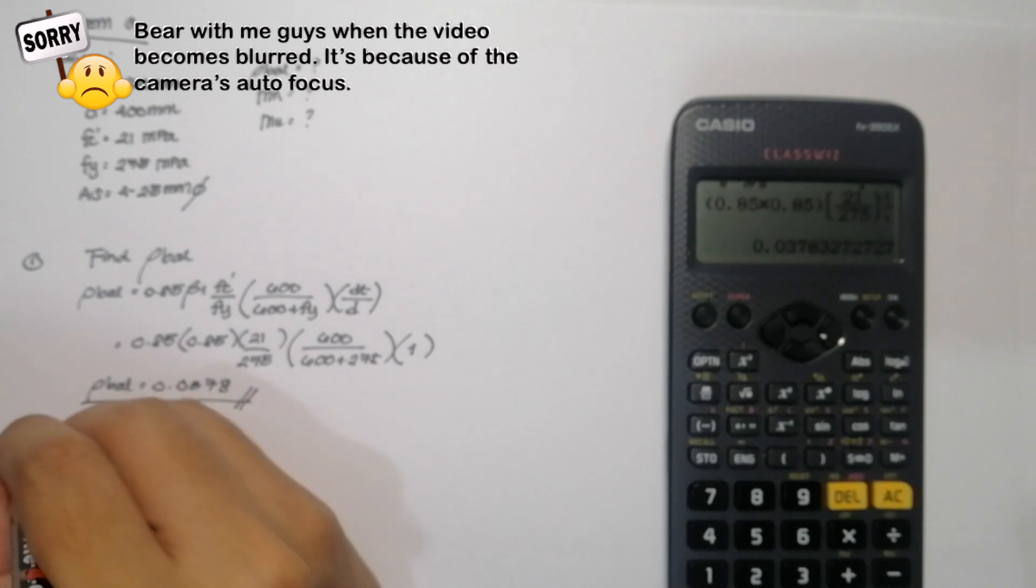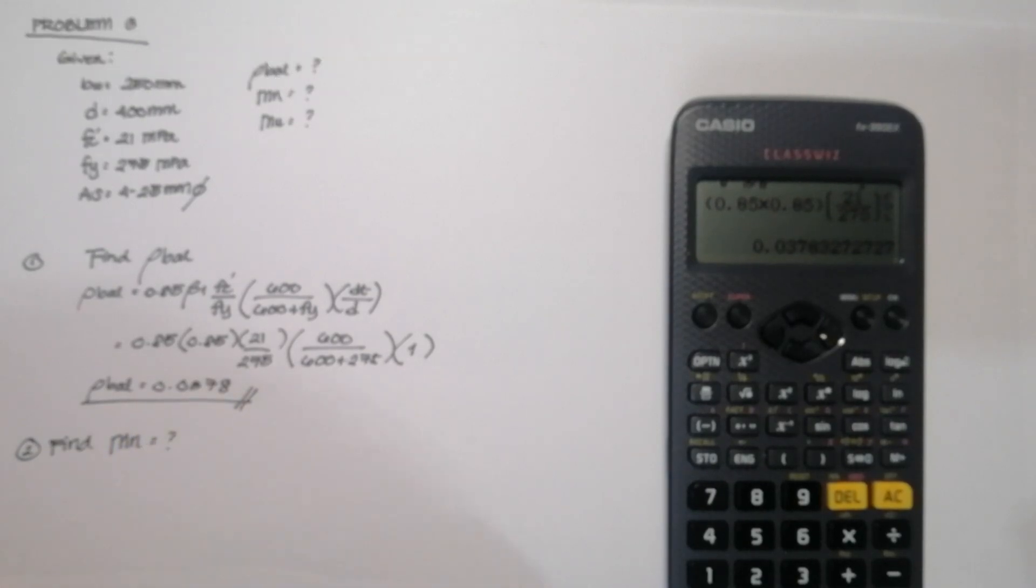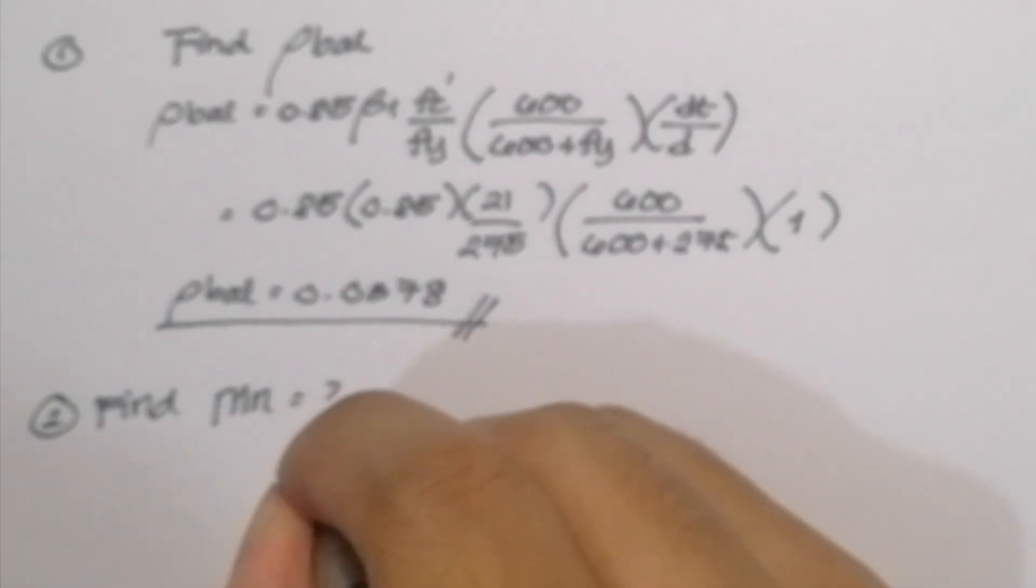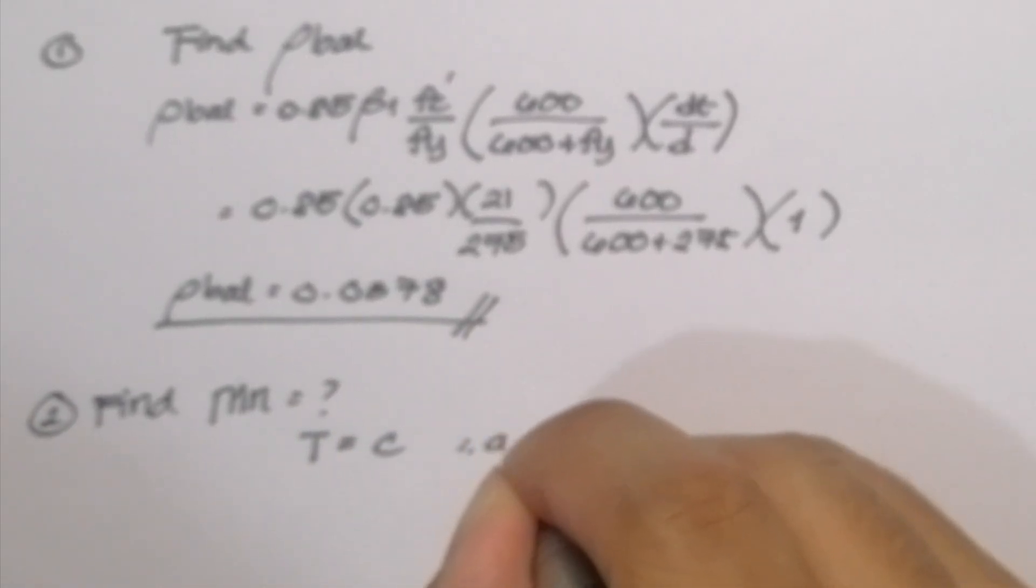So for our second question, we need to find the value of our nominal moment capacity of the beam. So by recalling our previous steps, we first need to equate the value of the tensile force and the compressive force in the beam. So it will be T is equal to C. And next, we need to assume the value of our Fs. So in here, we are going to assume that our Fs is greater than or equal to fy.